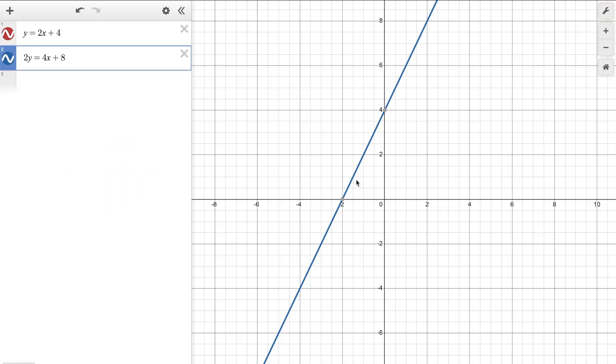Now, the last possible way two lines can intersect in two-dimensional space is everywhere. When two lines are equivalent, like these two, they intersect an infinite number of times since they fall on top of one another.